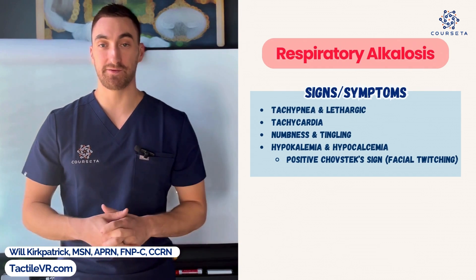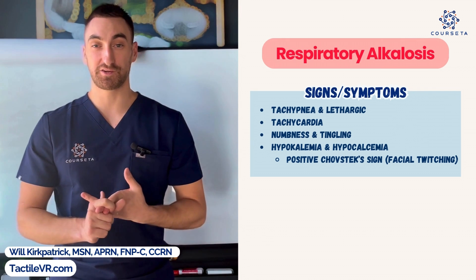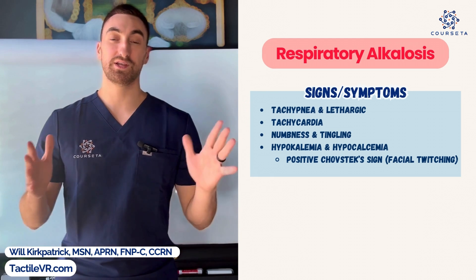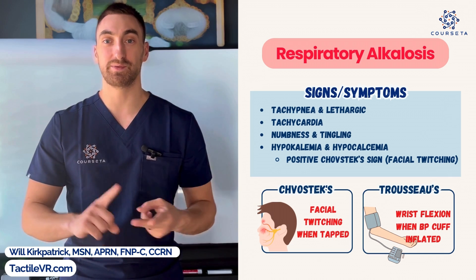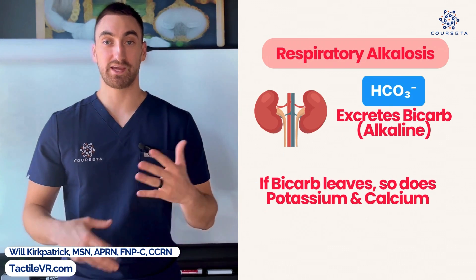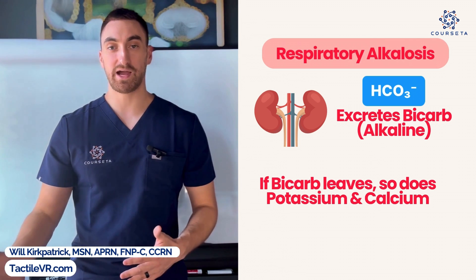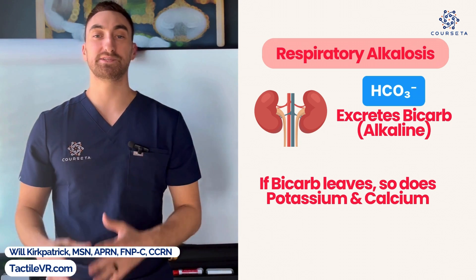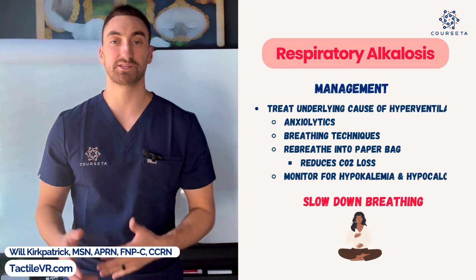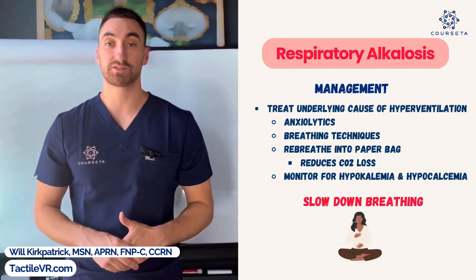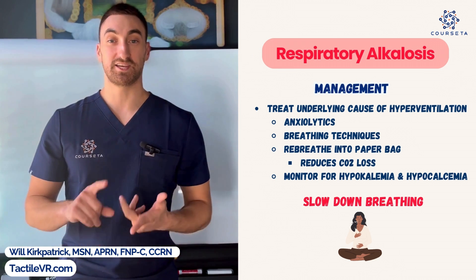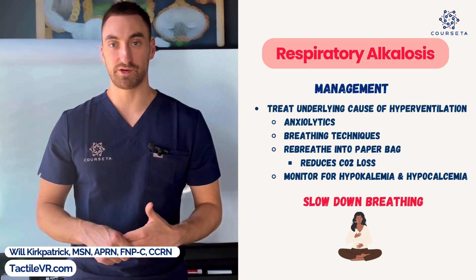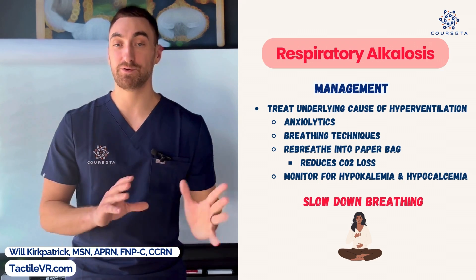Signs and symptoms of respiratory alkalosis include tachypnea, lethargy, tachycardia, numbness and tingling, and hypokalemia and hypocalcemia. Hypocalcemia is associated with Chvostek's sign and Trousseau's sign — make sure to write that down. The hypokalemia and hypocalcemia occur because the kidneys are compensating by spilling bicarbonate, potassium, and calcium as the renal threshold increases. Treatment involves addressing the underlying cause: anxiolytics for anxiety-driven hyperventilation, rebreathing into a paper bag to retain CO2, and breathing techniques to slow respiration. Monitor for hypokalemia and hypocalcemia.